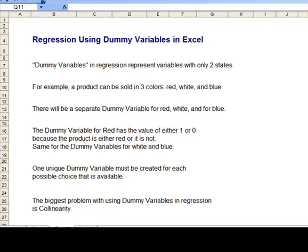The main points related to regression using dummy variables in Excel are as follows. Dummy variables in regression represent variables that have only two states. For example, a product can be sold in three colors: red, white, and blue. There will be a separate dummy variable for each color—for red, for white, and for blue.